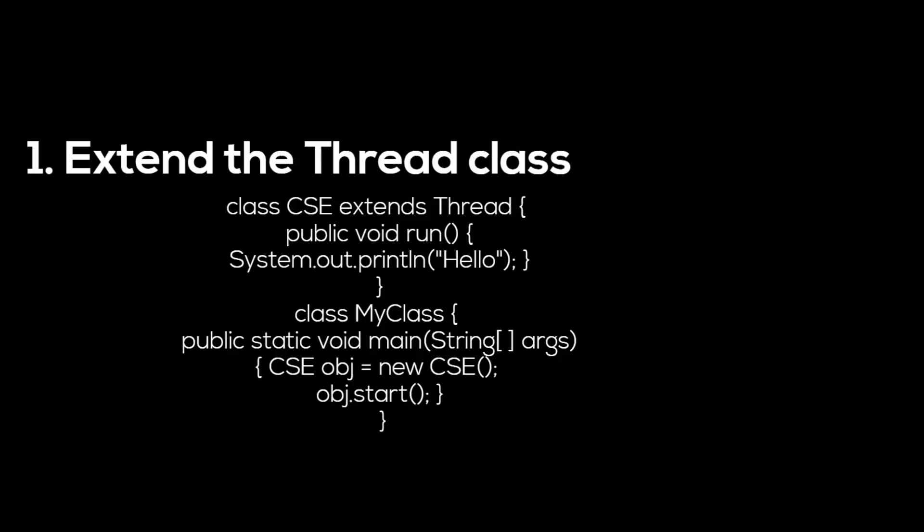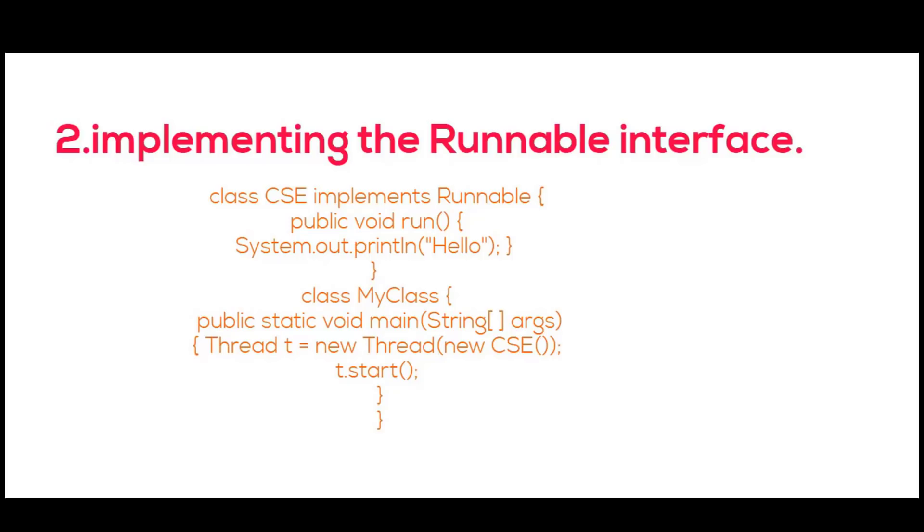In the second method, we have implemented Runnable interface in our CSE class and also we have implemented the run method. Then we have created a new thread object. We have passed the runnable class to its constructor. We have started the thread by calling start method. Now get back to our runtime versus compile time exception.